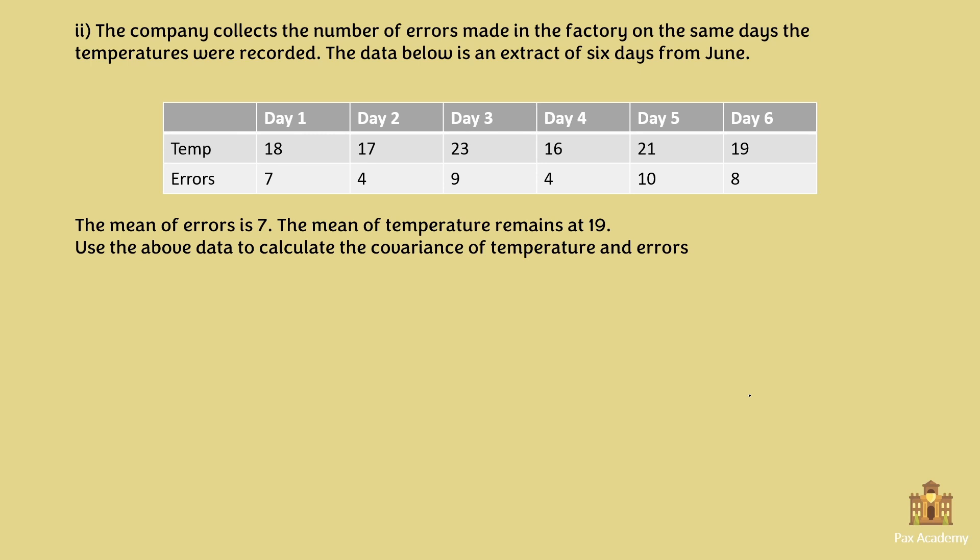So the first thing to note in this exercise is that here we're talking about a sample, because this, as the question indicates, is an extract of six days from June. So we know this is a sample. And then they're also very kind in this exercise because they already have calculated the means for us. So we know the mean of errors and the mean of temperatures, which saves us a lot of work.